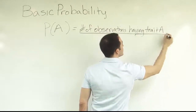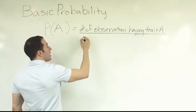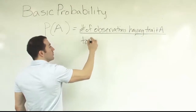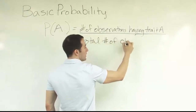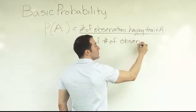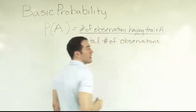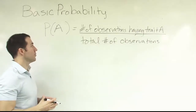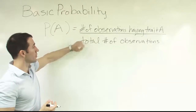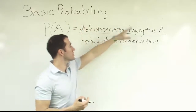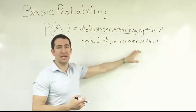The number of observations having that trait — say, blue eyes — divided by the total number of observations. So that's the structure of the fraction: the number of observations having the trait divided by the total number of observations made in the sample.